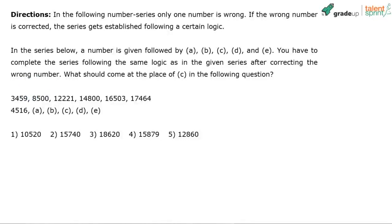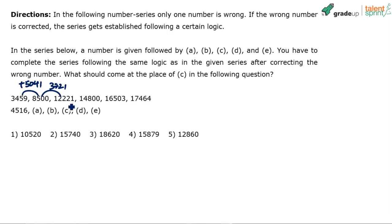Look at the differences in the numbers. The difference between 3,000 and 8,500 is 5,041. Then 8,500 and 12,221 — the difference is 3,721. Then the difference between 12,221 and 14,800 comes out to around 2,579. But observe something interesting in these two numbers.